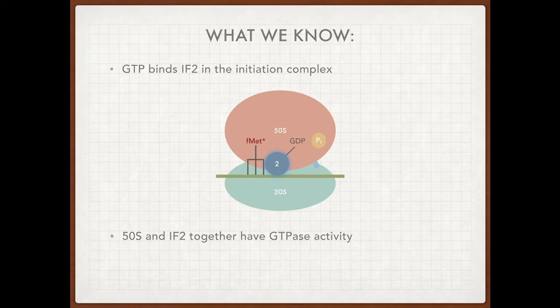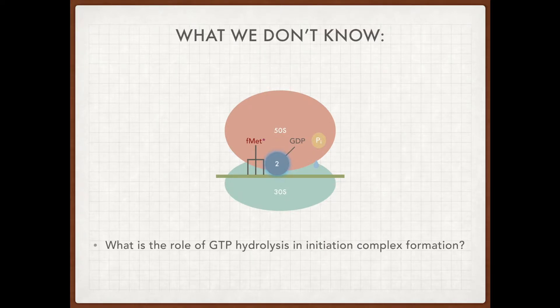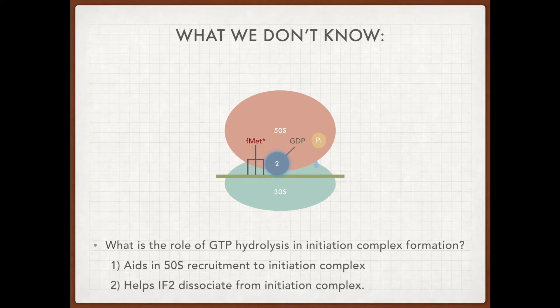Which leads us to the question that we don't know, which is, what is the role of GTP hydrolysis in initiation complex formation? From past experiments we know that tRNA recruitment to the initiation complex is not affected by GTP hydrolysis. This leads us to two possibilities. Either GTP hydrolysis aids in the recruitment of 50S to the initiation complex, or it allows IF2 to leave the initiation complex.